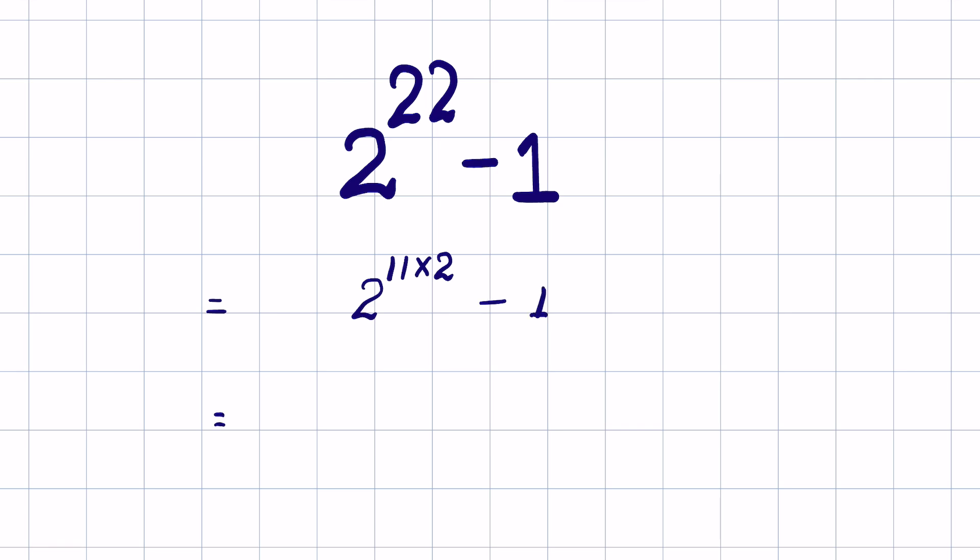There is an identity: a raised to the power m times n can be written as a raised to the power m, whole raised to the power n. So this becomes 2 raised to the power 11, whole raised to the power 2, minus 1.